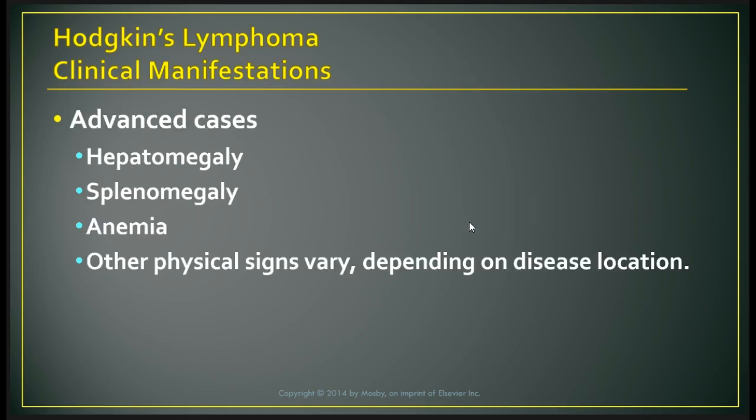In advanced cases, there can be hepatomegaly, splenomegaly, and anemia. Intrathoracic involvement may cause superior vena cava syndrome from compression, decreasing venous return. Enlarged retroperitoneal nodes can cause palpable abdominal masses interfering with renal function. Jaundice can occur with liver involvement. Spinal cord compression due to extradural involvement can lead to paraplegia. Bone pain occurs with bone involvement.